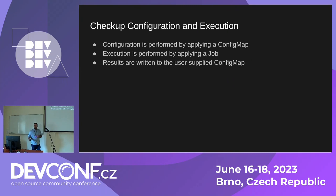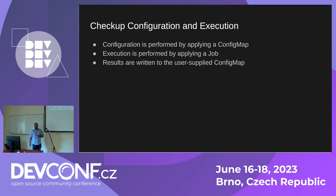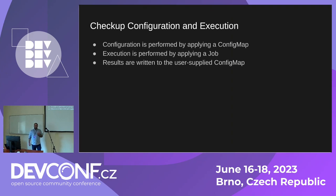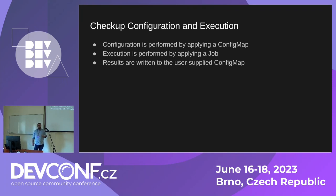How do you configure and execute a checkup? The configuration is very simple: you use a ConfigMap, which is a map of strings to strings — you define keys and values. You link this ConfigMap to a Kubernetes Job, which is a wrapper over a plain pod, and you execute the job. The job does its magic, finishes, and your cluster stays clean. After the checkup finishes, it writes its results back to the same ConfigMap you used to configure it. You can then read the results, save them for later investigation, or remove them if you no longer need them.